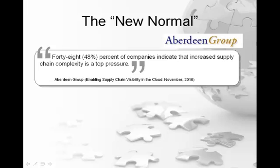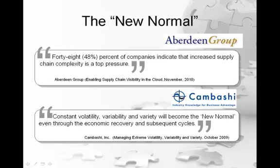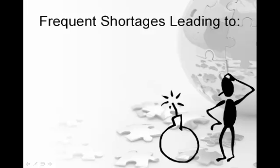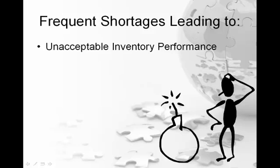Companies are waking up to this complexity. A recent Aberdeen Group study showed that nearly half of companies cite supply chain complexity as a top pressure, and this complexity is going to continue. Kombashi said that constant volatility, variability, and variety will become the new normal even through the economic recovery in subsequent cycles. So what are the effects of broken formal planning systems in the new normal? There are typically three effects that occur either individually or in some combination. The first effect is unacceptable inventory performance, characterized by too much of the wrong while also having too little of the right.